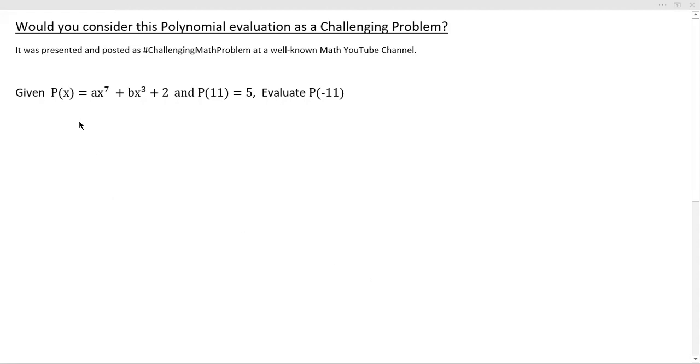You're given a polynomial, AX to the seventh plus BX cubed plus two, and you're also given that that polynomial evaluated at 11 is equal to five. Now, I notice you have some flexibility here about the A's and the B's,